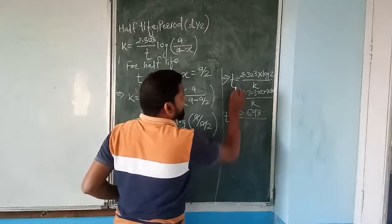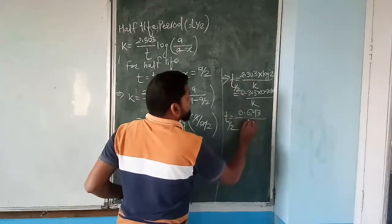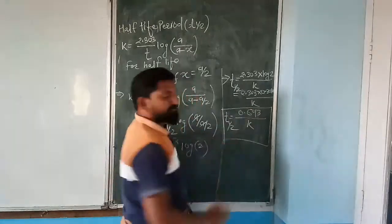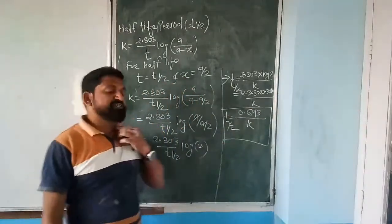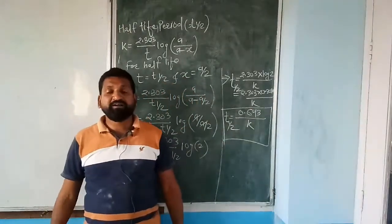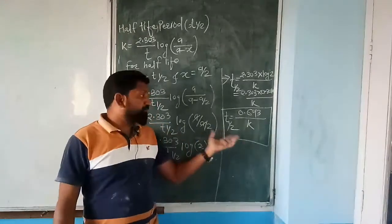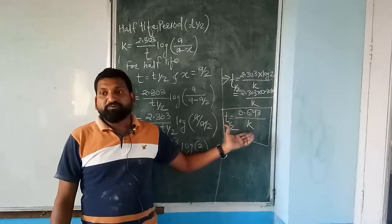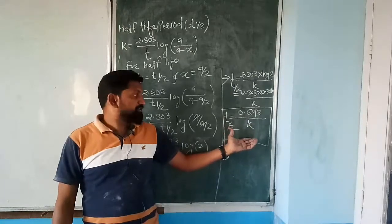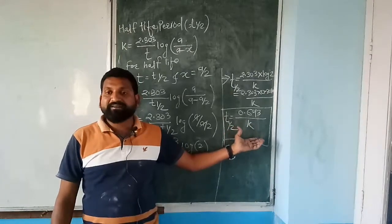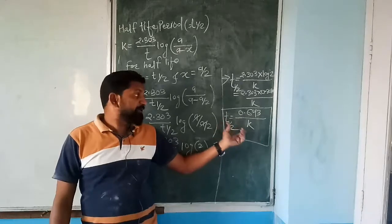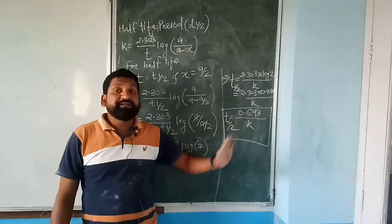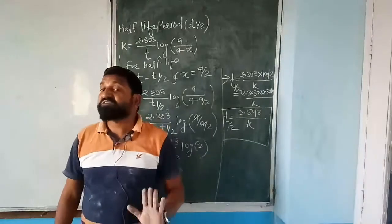This very important expression T½ = 0.693/k is the half-life period for the first order reaction, which is totally independent of the concentration of the reactant. The half-life period does not depend on the concentration of reactant — hence proved.